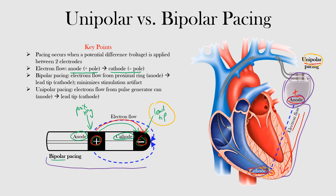With bipolar pacing, the entire lead is inserted so that you have your anode and cathode located very close to each other within the heart. This minimizes the stimulation artifact because the electrons do not have to travel so far — they travel from anode to cathode within that lead. So that helps minimize stimulation artifact with bipolar pacing modes.